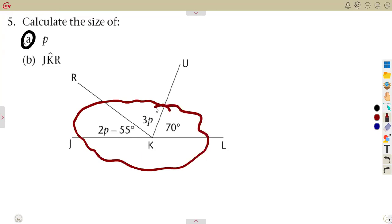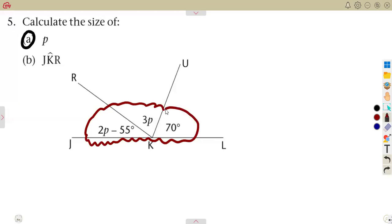The angles on a straight line add up to 180 degrees. So what you need to do is form an equation using these angles on a straight line.